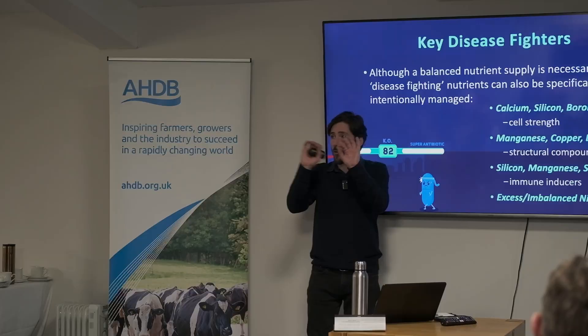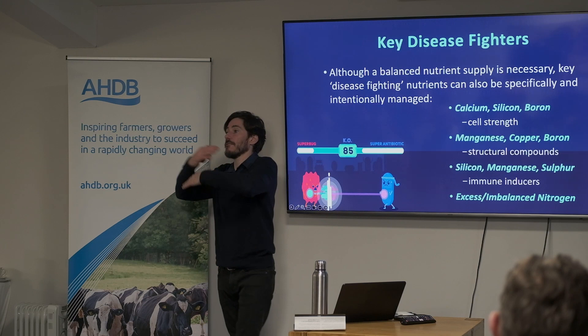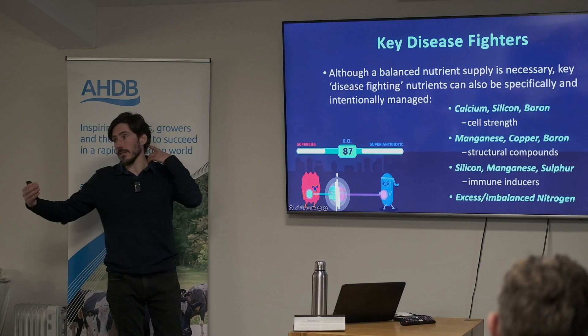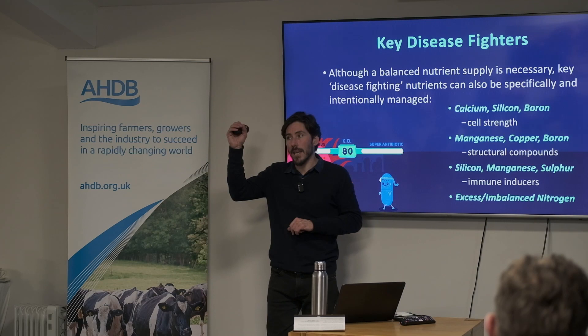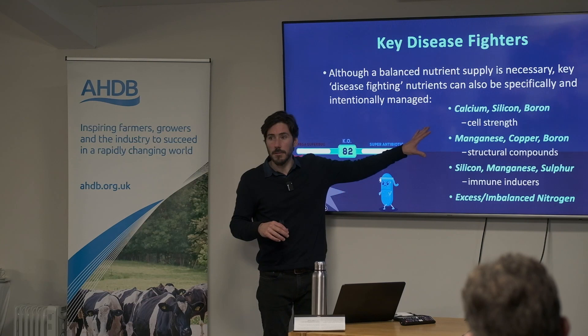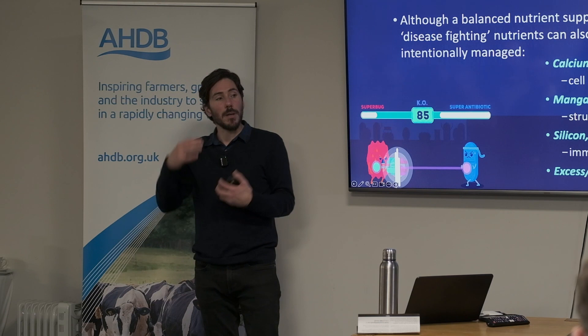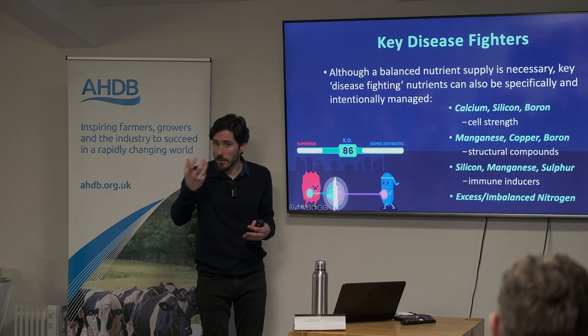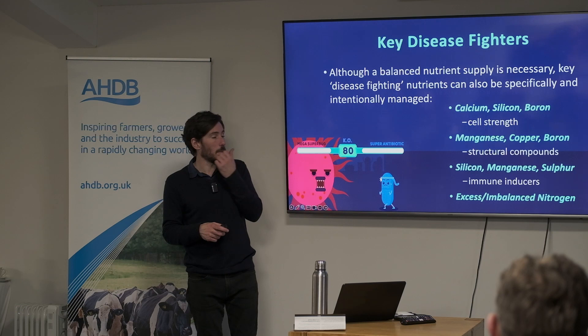For lignin biosynthesis and structural defense, the key nutrients are manganese, copper, and boron. These top five — calcium, silicon, boron, manganese, copper — are very important for primary physical defenses, toughening up the plant's skin. For internal systemic defense chemicals, silicon, manganese, and sulfur are particularly important. Brassicas are sulfur-rich plants with a biofumigant effect because of their sulfur-based biochemicals, so sulfur helps synthesize those defense chemicals. Make sure these nutrients are present in adequate amounts; if deficient, then apply.